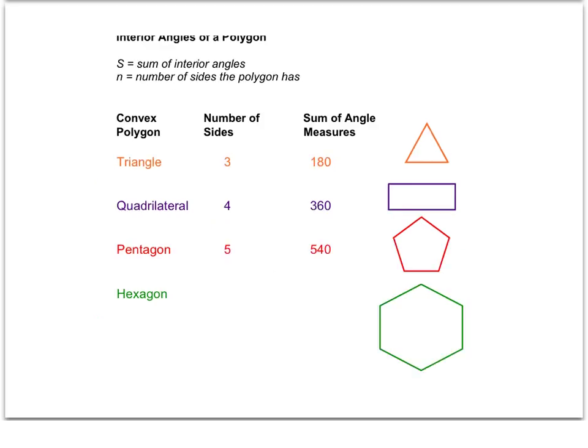We'll do this one more time. A hexagon is any six-sided figure, and, again, I'm going to create triangles, and it doesn't matter how you do it as long as you create three-sided figures in there.